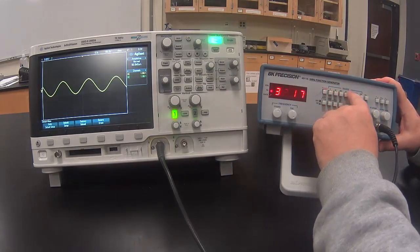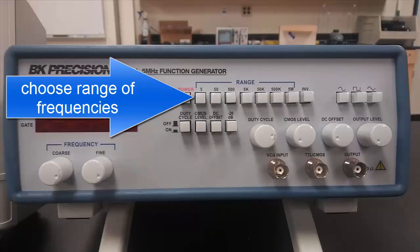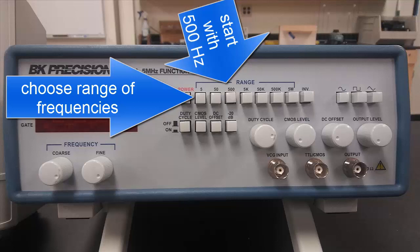This row of buttons at the top is what we use to select the range of frequencies that we want to work in. We're going to start with 500 Hz.